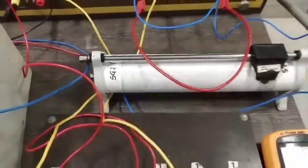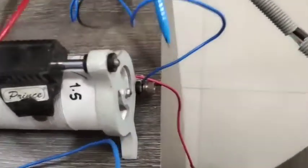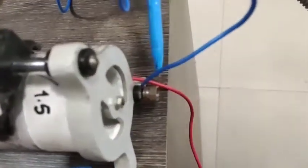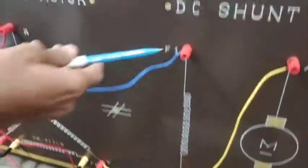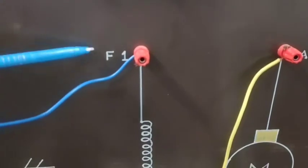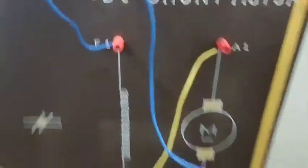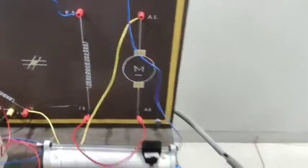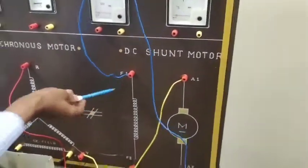Then this is the variable point — you can see here this is the variable point, and it is connected to field winding at F1. You can see variable point to F1.